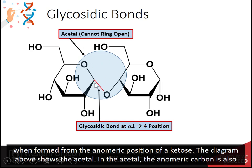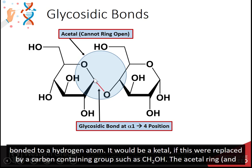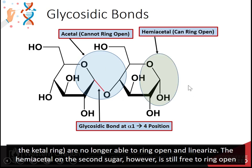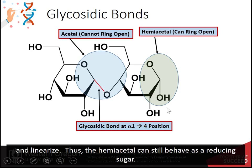In the acetal, the anomeric carbon is also bonded to a hydrogen atom. It would be a ketal if this were replaced by a carbon-containing group such as CH2OH. The acetal ring and the ketal ring are no longer able to ring open and linearize. However, the hemiacetal on the second sugar is still free to ring open and linearize, and thus can still behave as a reducing sugar.